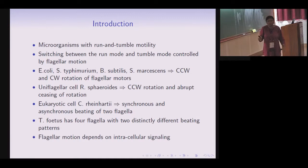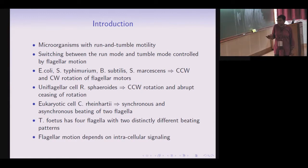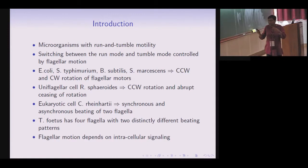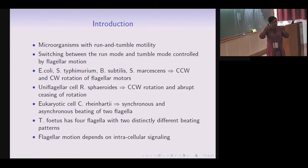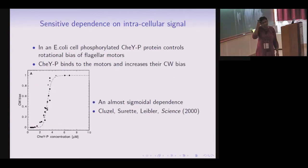The switching between run mode and tumble mode is controlled by flagella associated with the cell. Many microorganisms have multiple flagella, and at the base of each flagellum there is a small motor. When this motor rotates counterclockwise the cell runs; when it rotates clockwise the cell tumbles. In some cells a single flagellum either rotates or stops. In eukaryotic cells the flagella shows beating patterns different for run and tumble. The flagellar motion is controlled by intracellular reactions, and in many cases this dependence is found to be very sensitive.